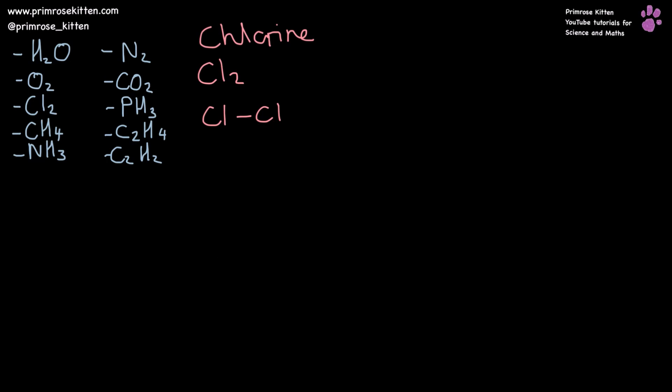Chlorine. This is quite an easy one compared to some of the other ones we've just been doing. Chlorine. Chlorine. There is a single bond in the middle. Chlorine has seven electrons on its outer shell. So we can just fill in the seven around the side.